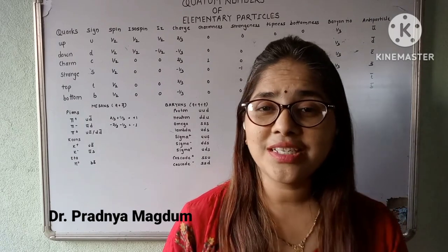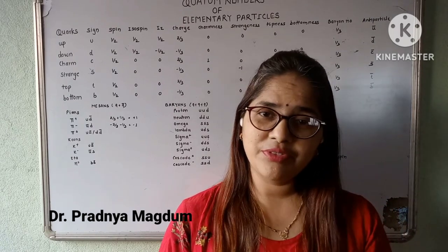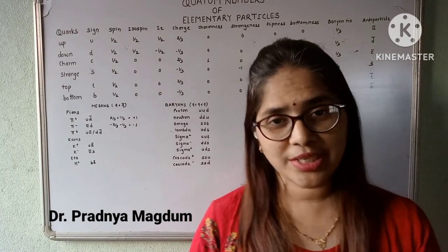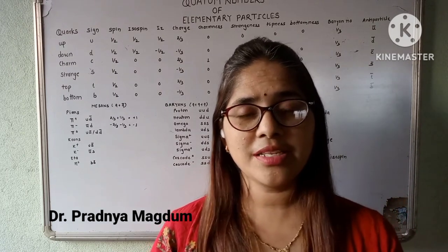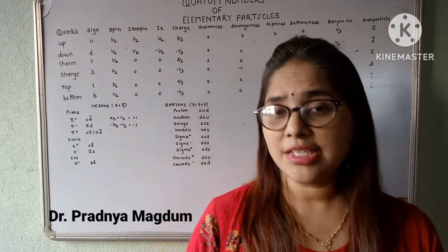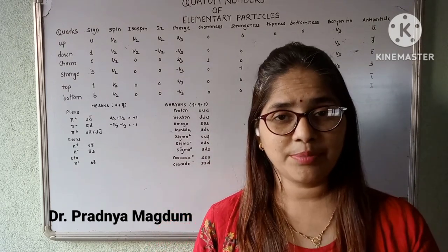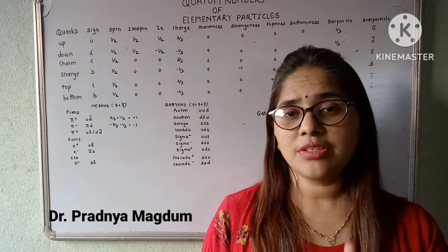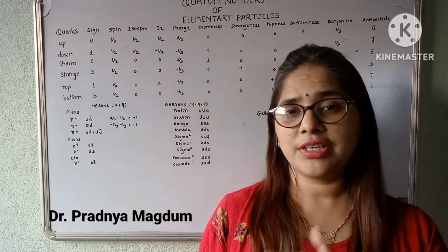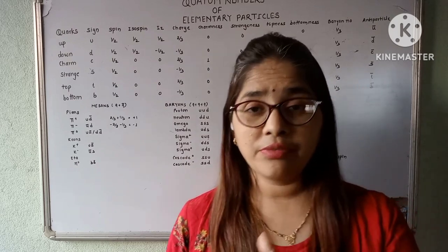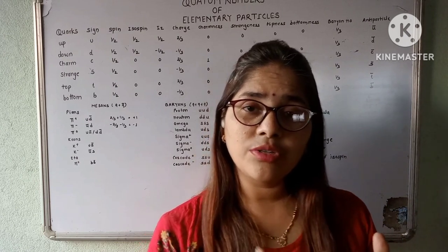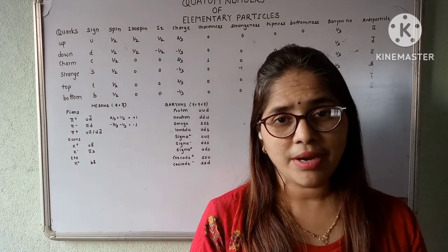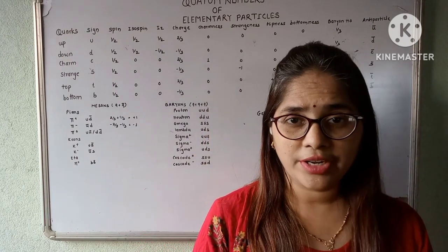Hello students. In my previous video we have seen the classification of the elementary particles, and we have classified the elementary particles as the leptons and the hadrons. Leptons are the particles which are taking part in weak interaction, whereas the hadrons are the particles which are taking part in strong interaction.